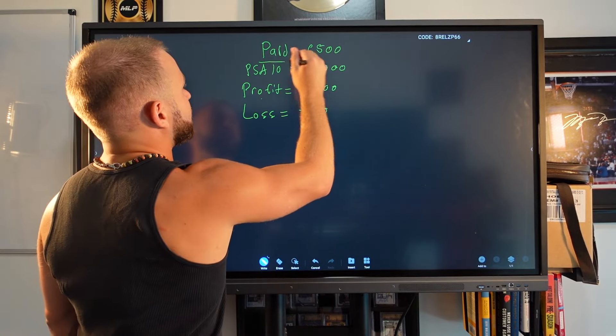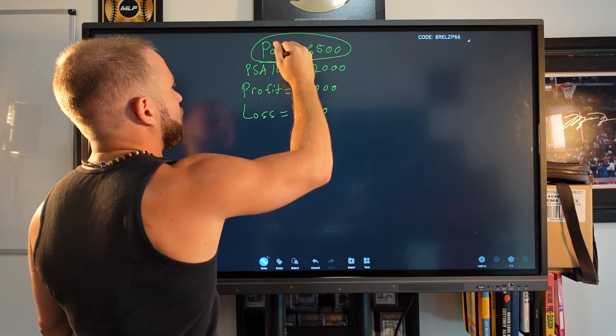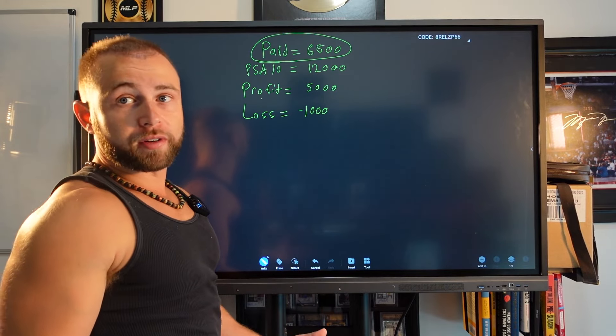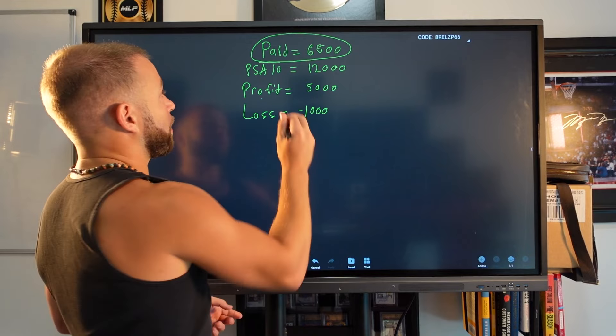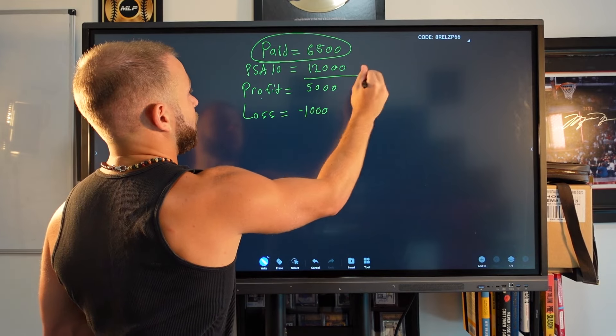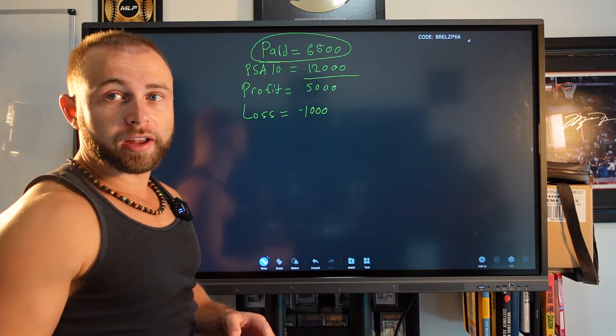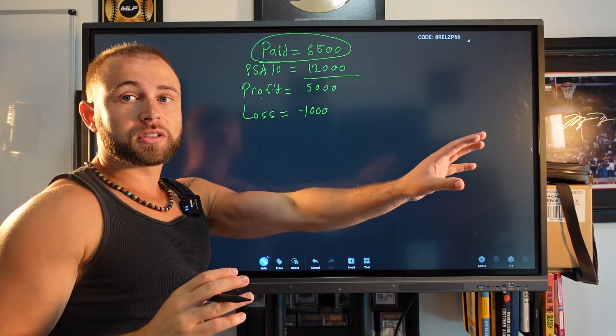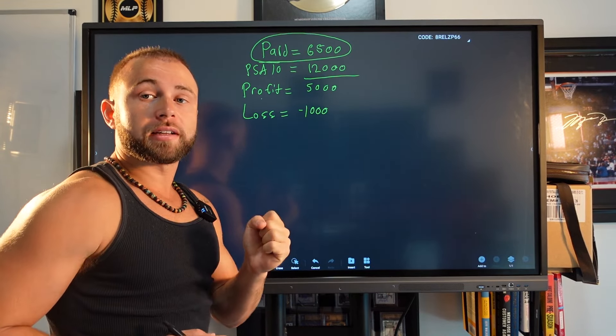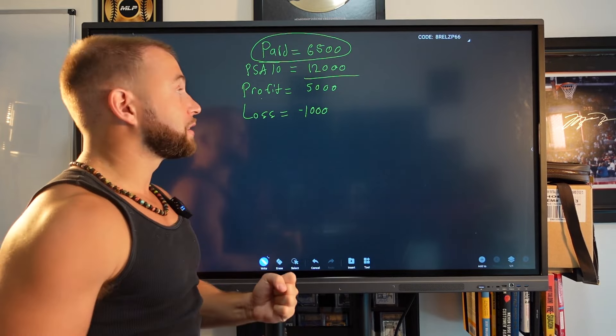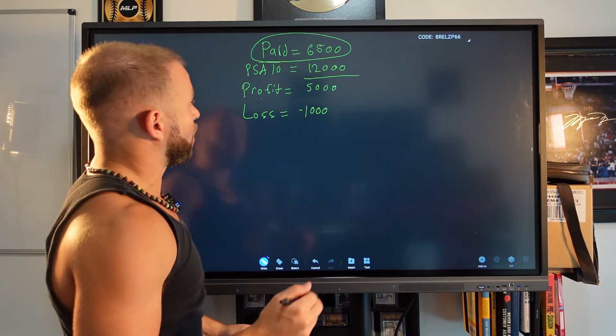I ended up paying $6,500 for the card. So I overpaid for it. But this is why I overpaid for it. Now, we just discovered a PSA 10 today is worth $12,000. One did about $15,000 back in January of 2023, and we discovered looking at a Silver Prism PSA 10, his value is down about 20%. That's how we get to $12,000.